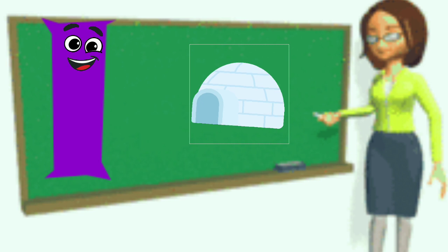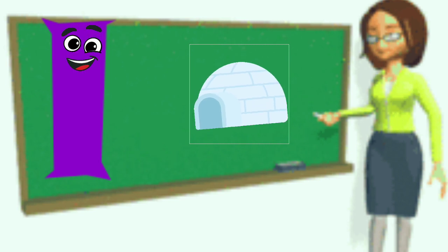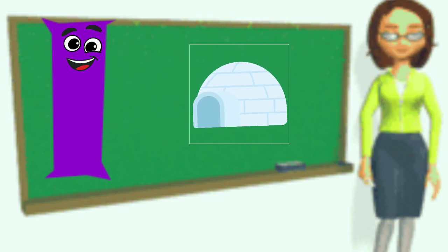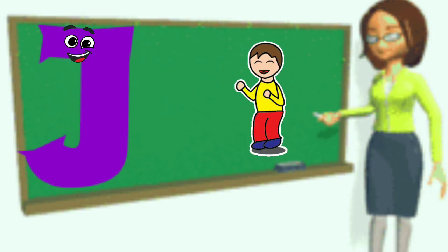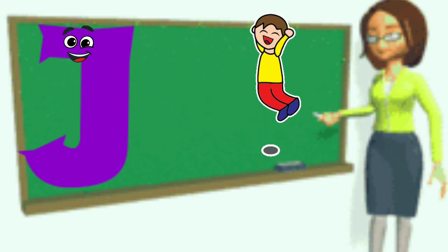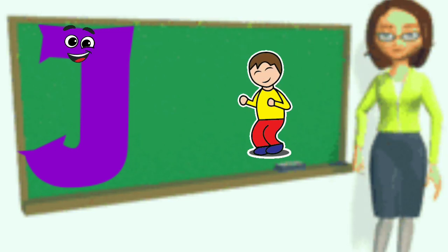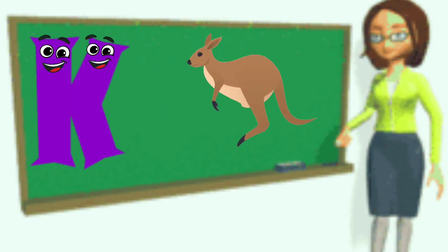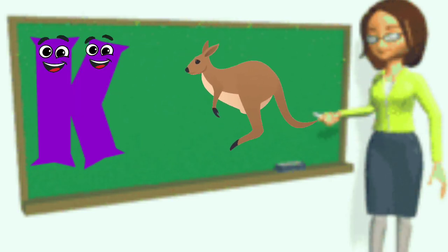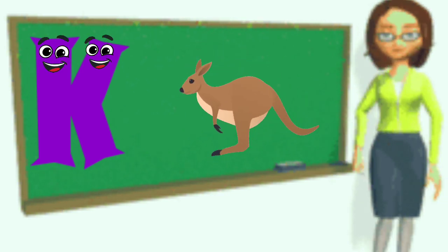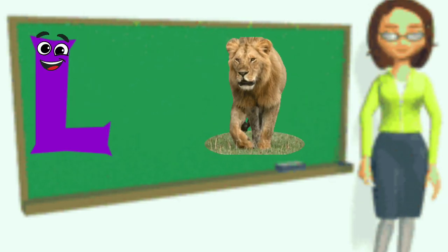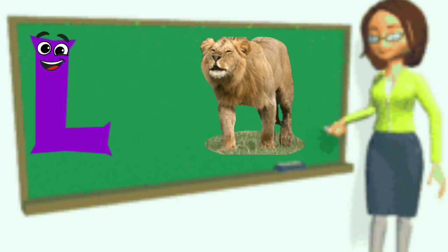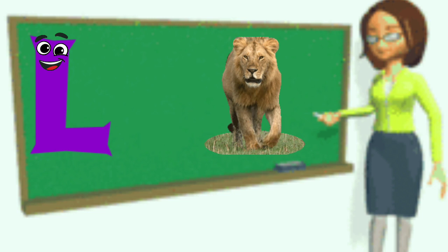I is for Igloo, I-I-Igloo. J is for Jump, J-J-Jump. K is for Kangaroo, K-K-Kangaroo. L is for Lion, L-L-Lion.